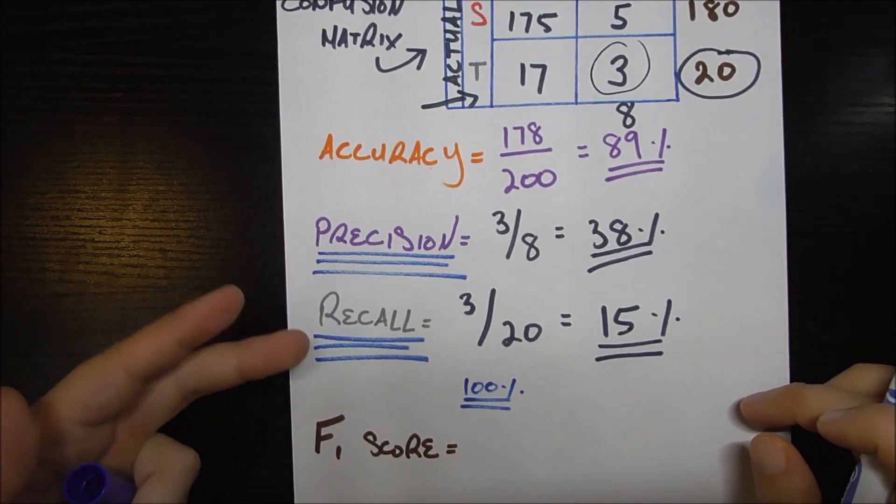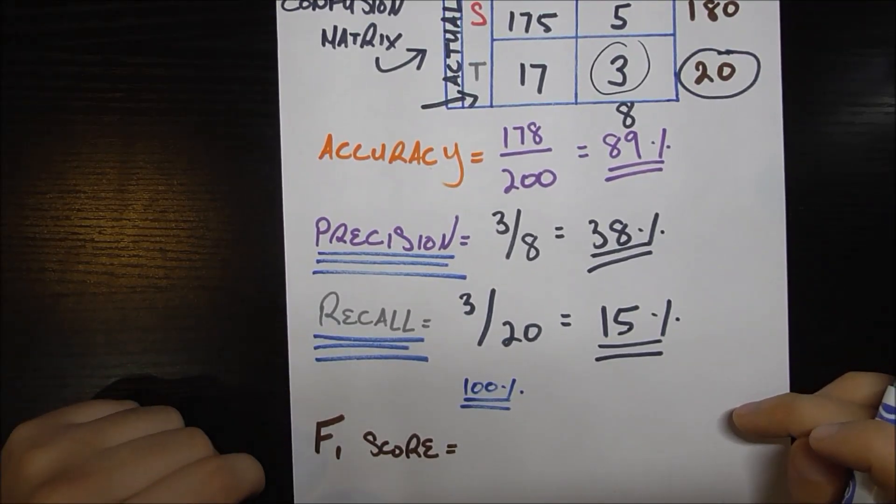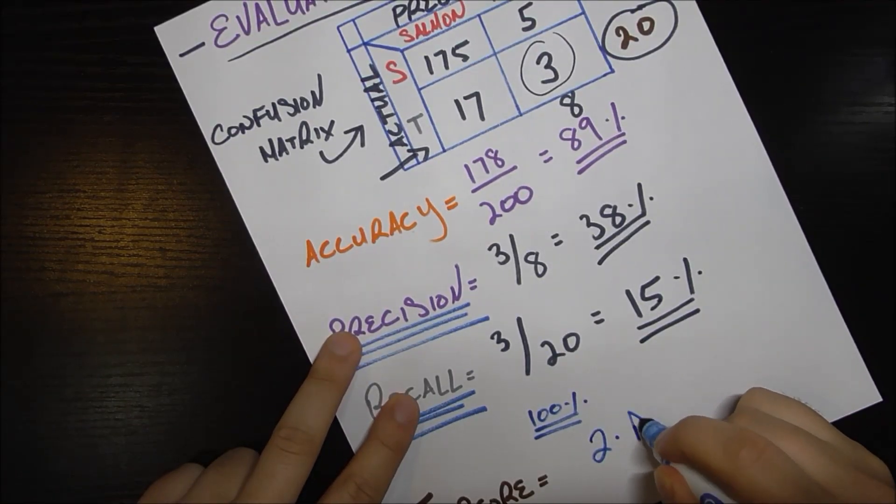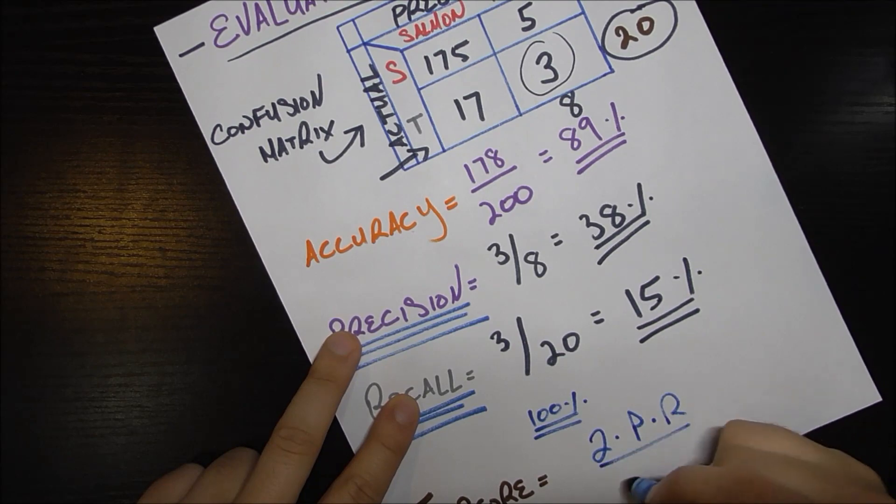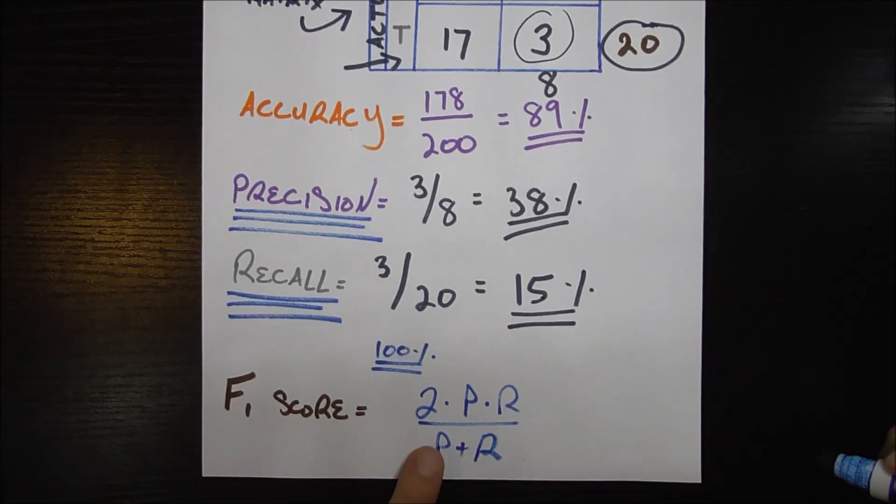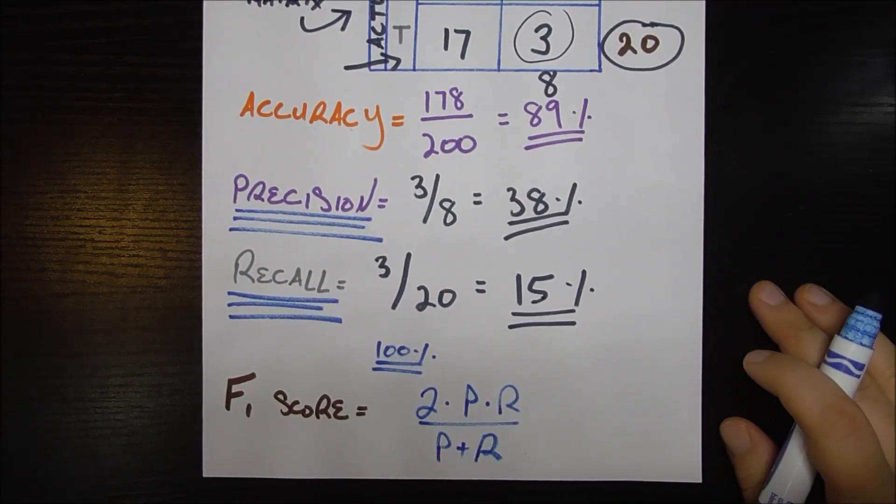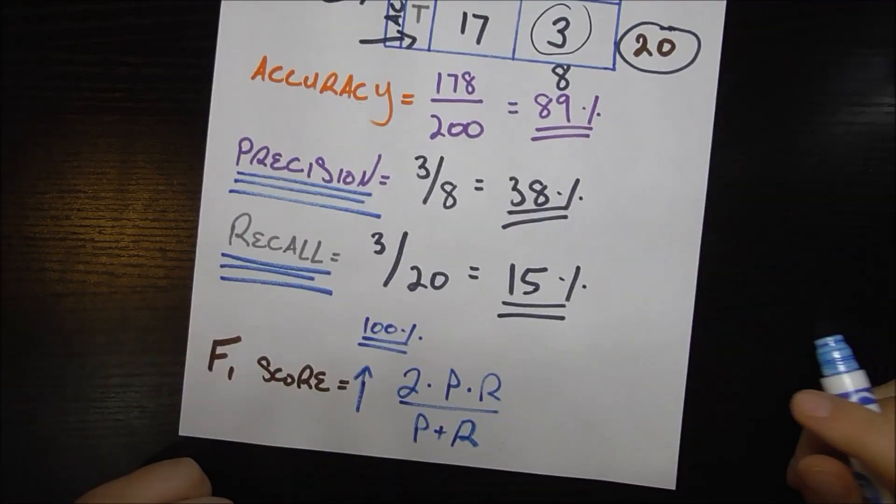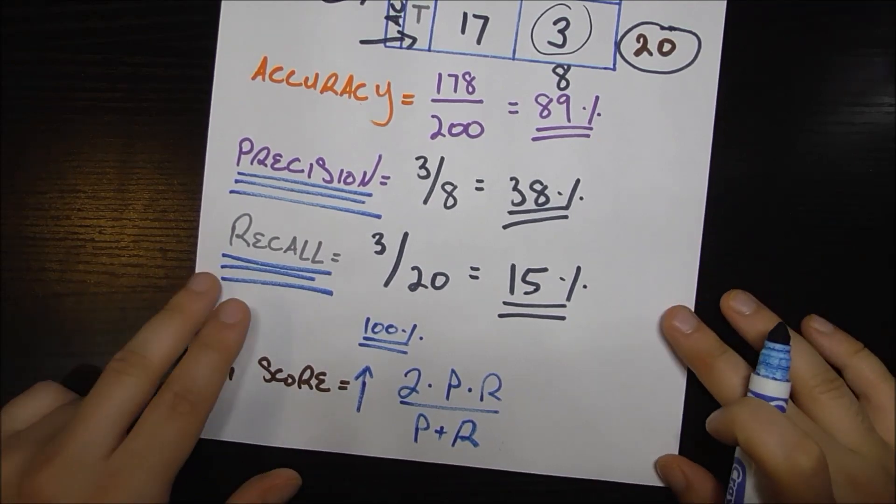So how do we fix that so that we can't game the system? We calculate something called an F1 score which is simply just two times precision times recall over precision plus recall. If you know what a harmonic mean is, this is just the harmonic mean of precision and recall. If you don't know what that means don't worry about it, but this basically just captures both metrics so that you're trying to maximize the F1 score, you need to maximize both precision and recall to some extent.